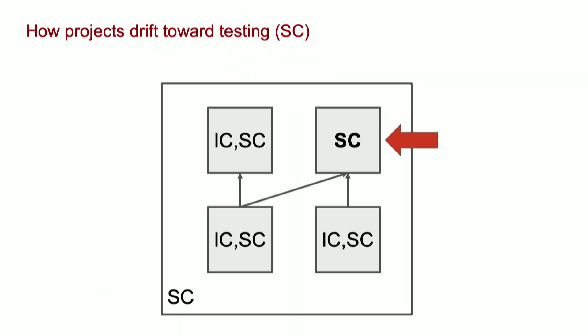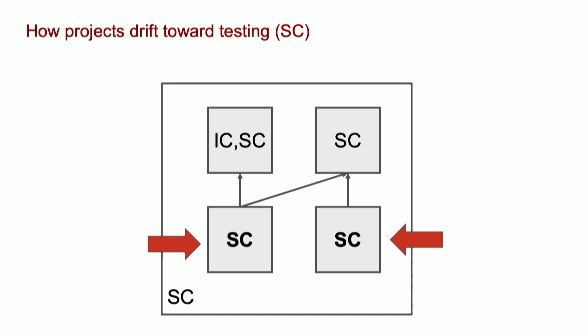But it gets worse. Invariably, schedule pressure or some engineer that didn't quite understand what's going on gets in there and starts hacking some module, and you sort of lose your clear understanding of what's going on inside there. It reverts to only having statistical control — the tests make sure it continues to work, but if you had to describe it, you'd have a really hard time. The problem is it's kind of infectious: once one module loses its clear description, the modules around it tend to lose their clear descriptions too.